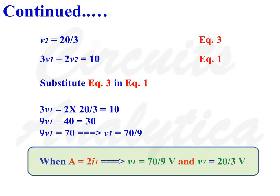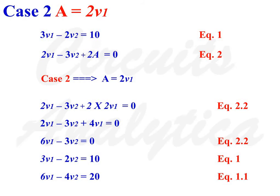Case 2: A is equal to 2V1. Starting from Equation 1: 3V1 minus 2V2 equals 10, and Equation 2: 2V1 minus 3V2 plus 2A equals 0. Substituting A equals 2V1: 2V1 minus 3V2 plus 2 times 2V1 equals 0, giving 2V1 minus 3V2 plus 4V1 equals 0, so 6V1 minus 3V2 equals 0 as Equation 2.